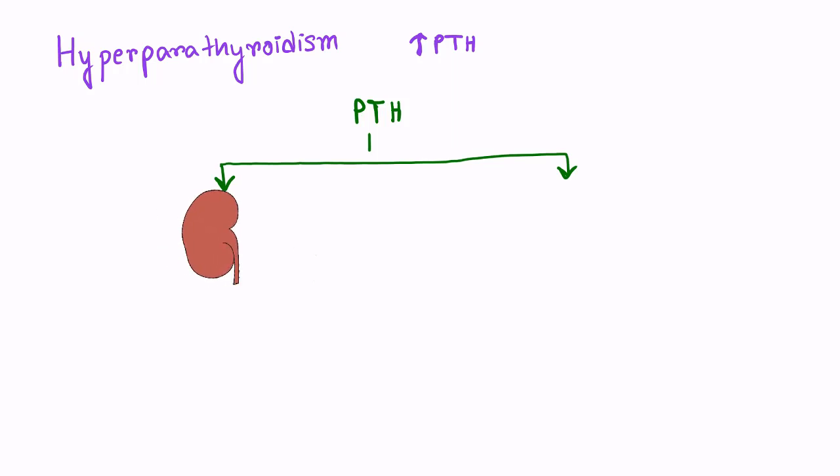All of us know the function of PTH is to increase calcium in blood. It acts on the kidney and increases the absorption of calcium ions with exchange of phosphate, which results in hypophosphatemia.